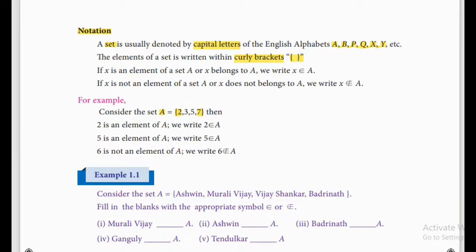If X is an element of set A, we say X belongs to A. The symbol looks like the letter E and we pronounce it 'belongs to.' For example, consider the set A equal to {2, 3, 5, 7}. This set contains 4 elements: 2, 3, 5, and 7.